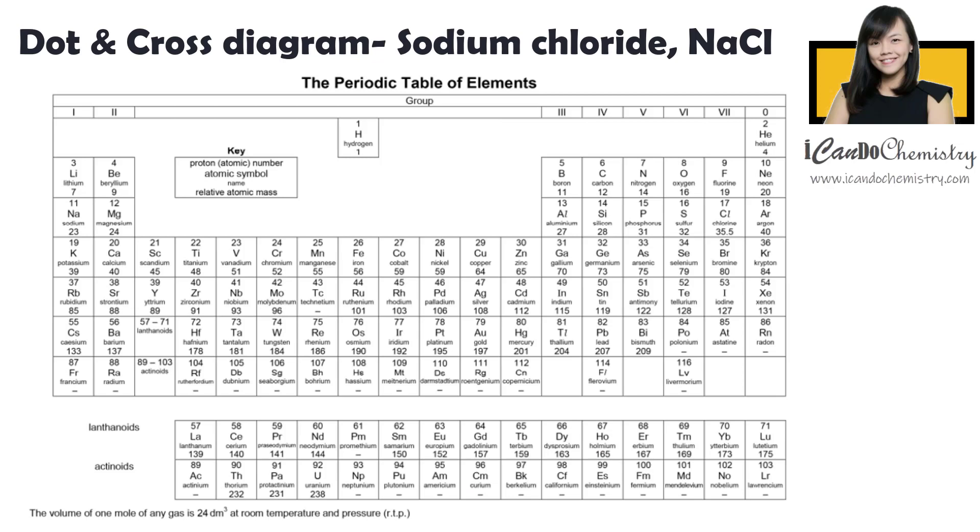This is the periodic table. We can determine the number of electrons each atom has from the periodic table. Look here, the key. In this periodic table, the number at the top tells us the number of protons an atom has. Since the number of protons and electrons are the same in an atom, this number also tells us how many electrons each atom has.